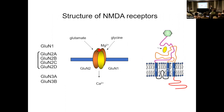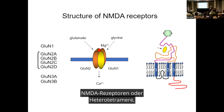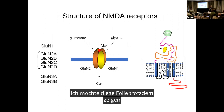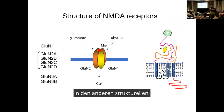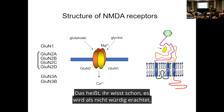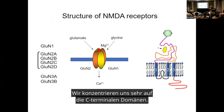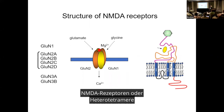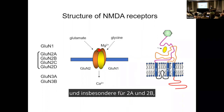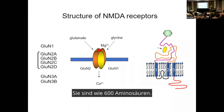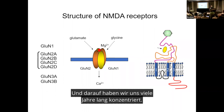Everyone at this meeting knows that NMDA receptors are heterotetramers. I still want to show this slide because what I point out is this region that is often lopped off in other structural representations. We focus a lot of our attention on the C-terminal domains. Each of the subunits has a topology, and in particular for GluN2A and GluN2B, the C-terminal domains are big — about 600 amino acids.